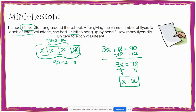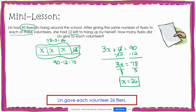Let's look at what that means in terms of our problem. The question asked how many flyers did Lynn give to each volunteer. I found that the value of each x is 26, so this means that Lynn gave each volunteer 26 flyers.